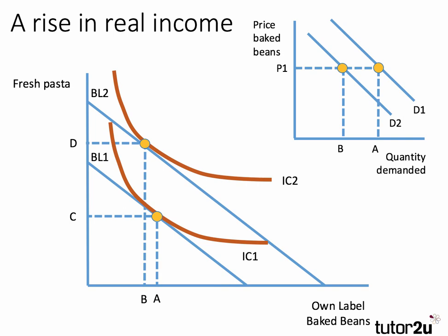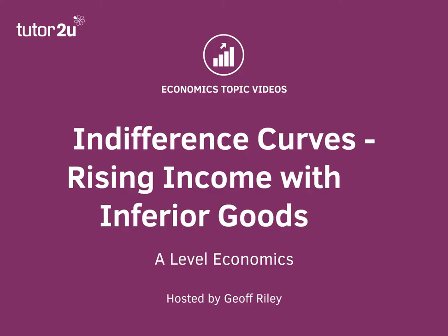What does that mean for the demand curve for baked beans? It tells us that if real income goes up, even if price stays the same, we would expect to see an inward shift of the demand curve for economy baked beans — consumers might move on to superior products. That is how you use indifference curve analysis to show the effect of an increase in income where one of the products is inferior. Thanks for joining in on this one.